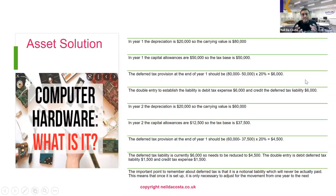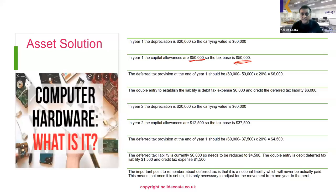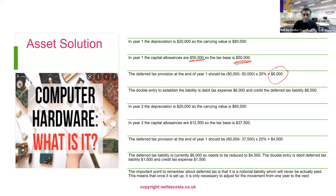In year one, depreciation is $20,000 at 20%, so the carrying value of the asset is $80,000. The capital allowances in year one are $50,000, so the tax base is $50,000. We have a temporary difference between the carrying value and the tax base. The deferred tax provision at the end of year one is $80,000 minus $50,000 equals $30,000, multiplied by the tax rate of 20%, giving a deferred tax liability of $6,000. The double entry is: debit the tax expense $6,000 and credit the deferred tax liability $6,000.